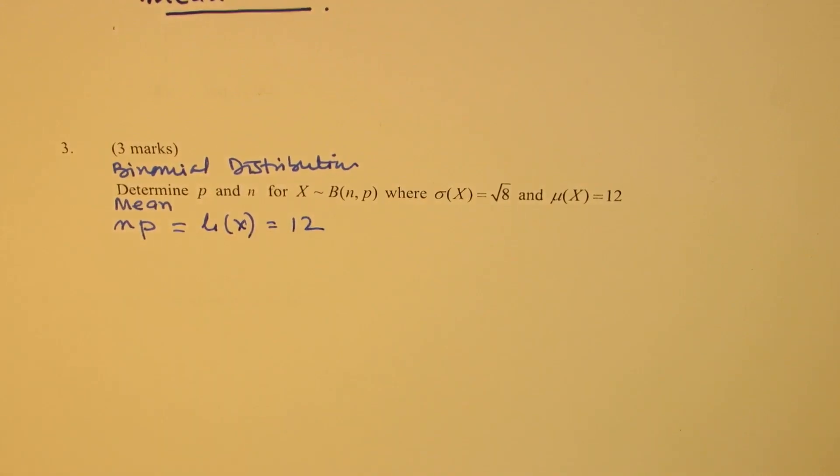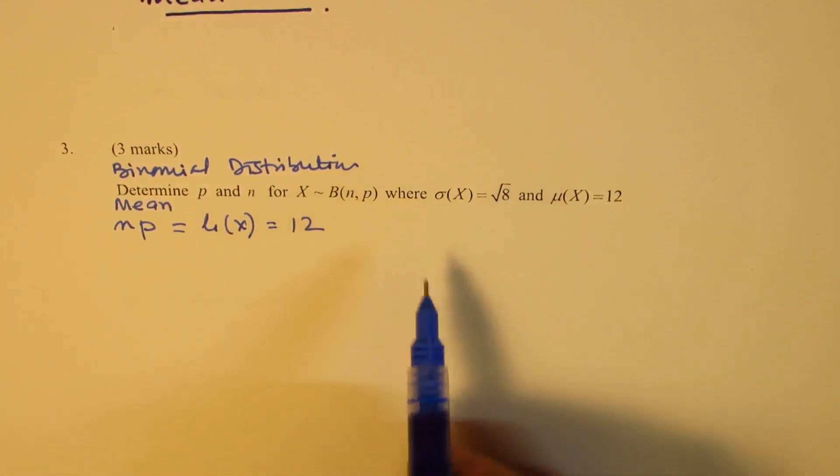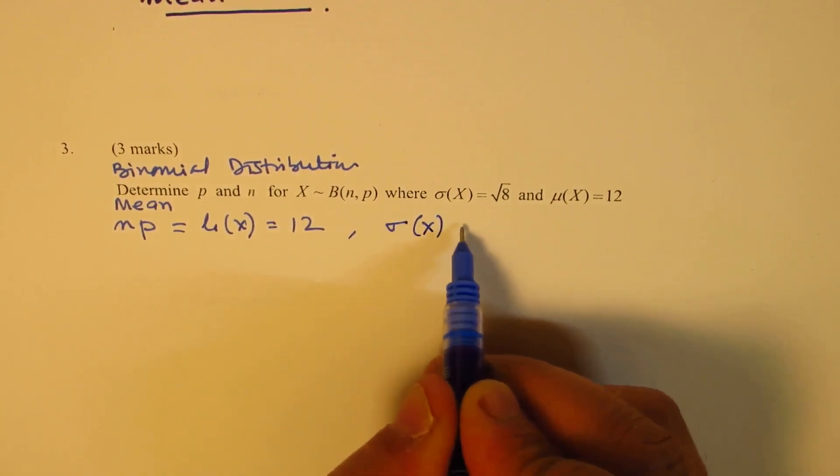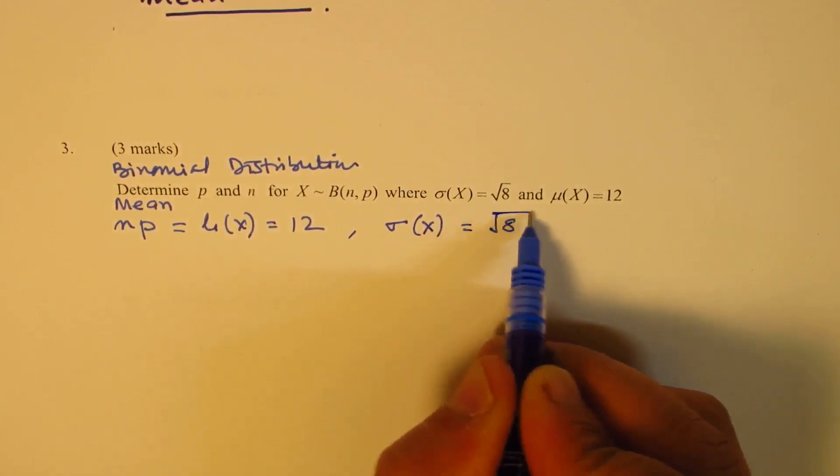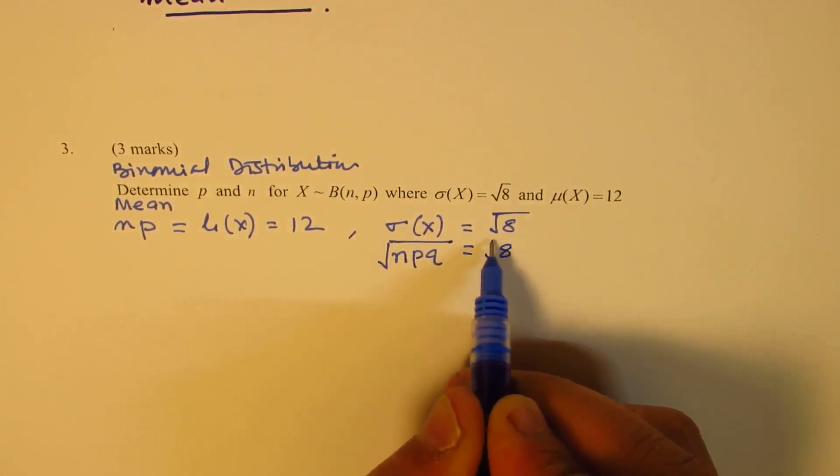The second equation is the standard deviation, which is equal to square root of 8. So that means the square root of NPQ is square root of 8.